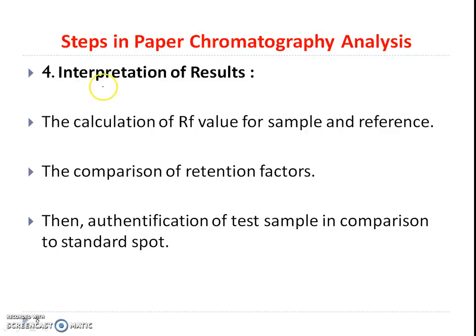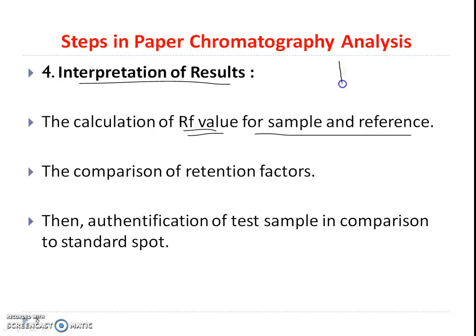The fourth step is interpretation of results. After development of the chromatogram and use of a specific derivatizing agent, the calculation of the RF value is carried out. RF value, that is the retardation factor, is defined as the distance traveled by the particular substance divided by the distance traveled by the solvent front. The RF value of the sample is compared with that of a reference, and then the authentication of the sample is carried out with respect to the standard.